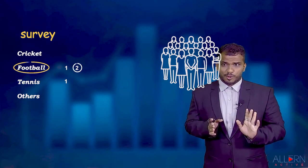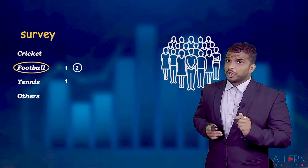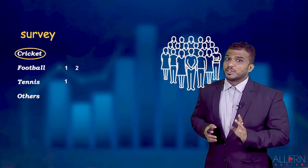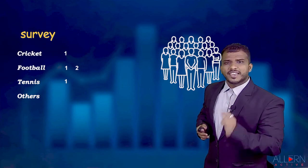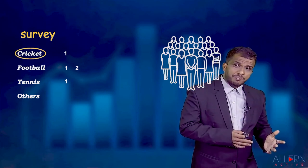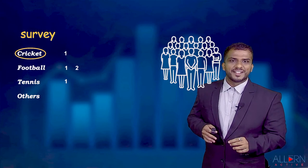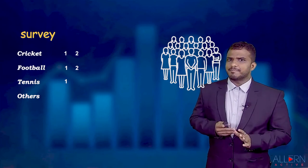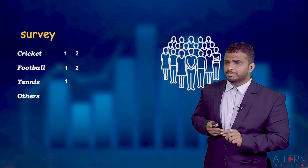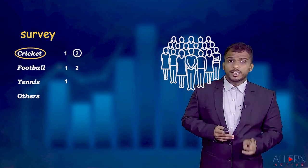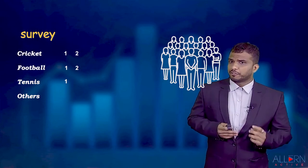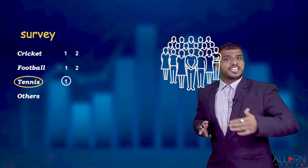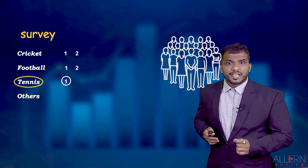The next person says they are a big fan of Virat Kohli and like cricket, so we write one corresponding to cricket. The person after that also likes cricket, so we write two. In this sample of five people, we have two who like cricket, two who like football, and one who likes tennis — easy to find so far.